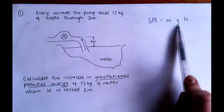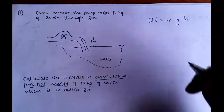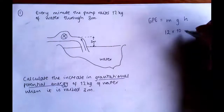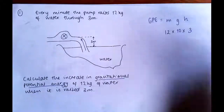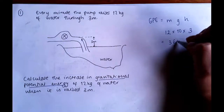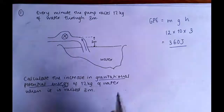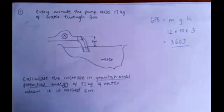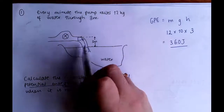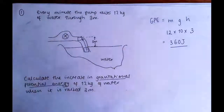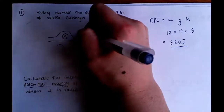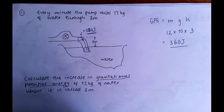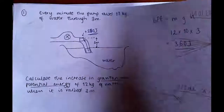GPE equals MGH — mass, gravity, height that the object moves through. We know that we've got 12 kilograms, G is 10 metres per second squared, that's a constant value, and H is the height it moves up through, which is three metres. When we multiply that out we get 360 joules. So if 12 kilograms of water moves up by three metres, it gains 360 joules of potential energy by the time it reaches the top. That was quite straightforward — hopefully everyone's good with that one.